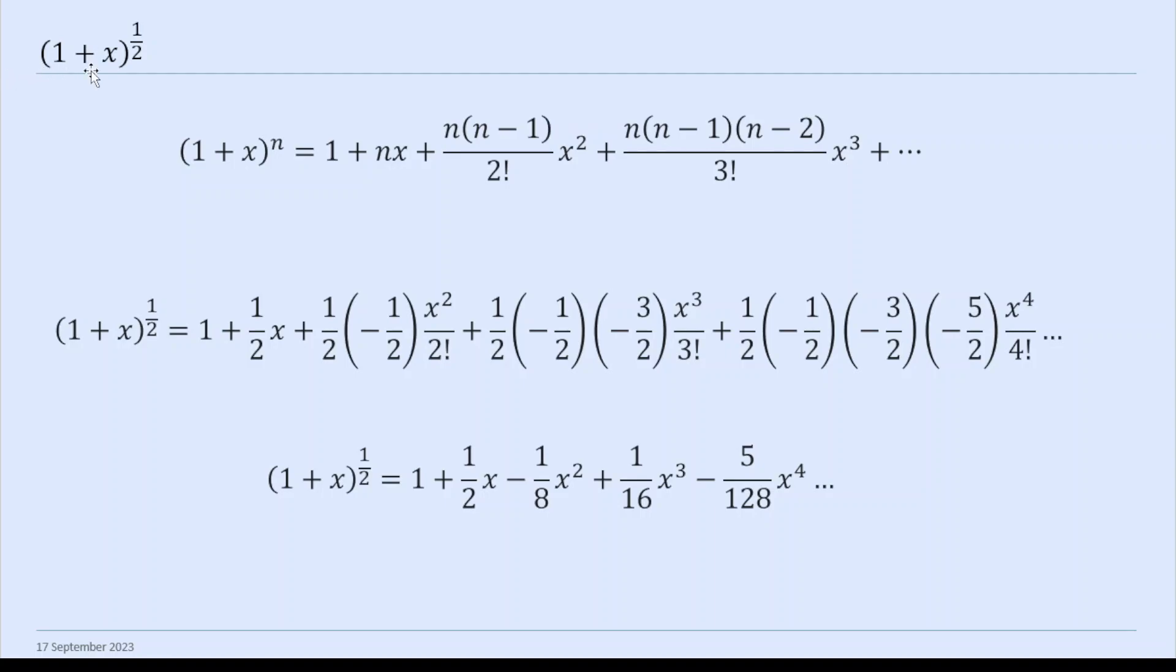For instance, it's things like this: 1 plus x to the power 1 half. So we know by the binomial theorem that (1+x)^n = 1 + nx + n(n-1)/2! x^2 + n(n-1)(n-2)/3! x^3 and so on. It's an infinite series and this only works if the magnitude of x is less than 1.